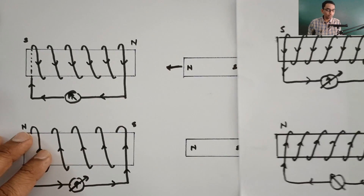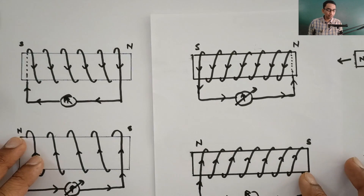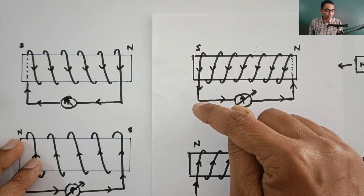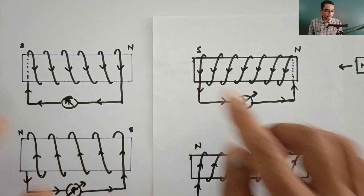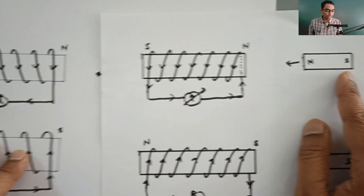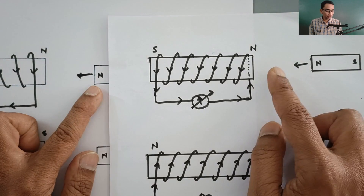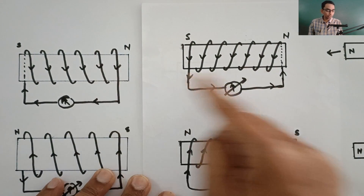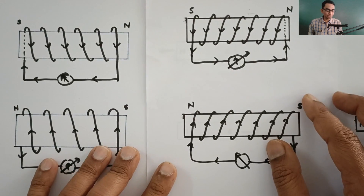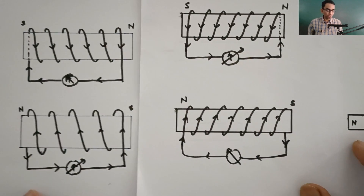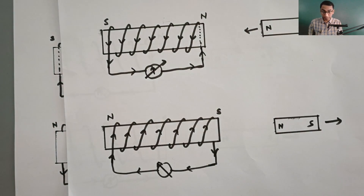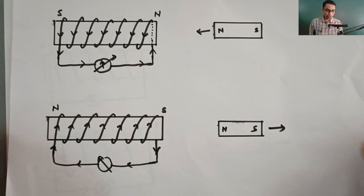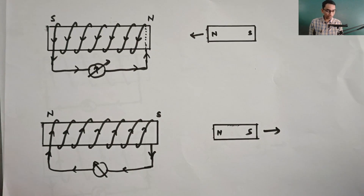Now let us compare both diagrams simultaneously. In one case, the winding was from behind; in the other it was from the top. The North Pole was coming towards the bar magnet in both, and you can clearly see that the direction of current is opposite in both cases. I think that after this clear explanation, there should be no doubts left. But if there are still any doubts, you may definitely comment in the comment section.